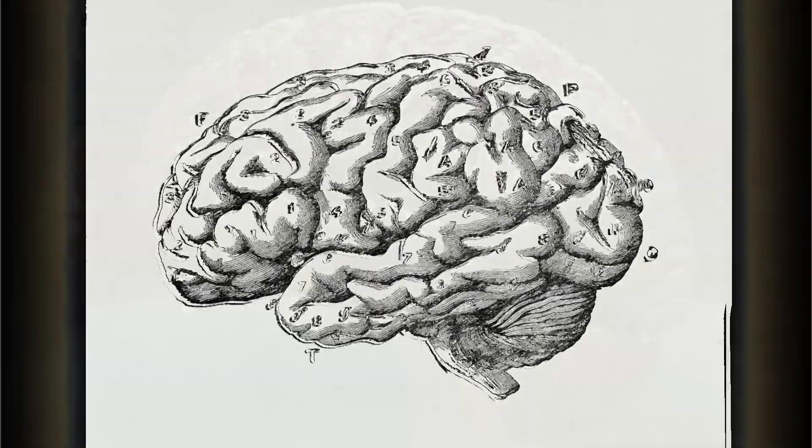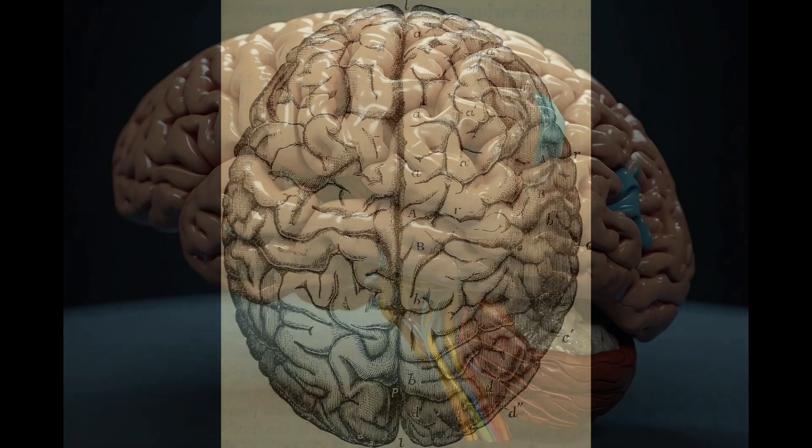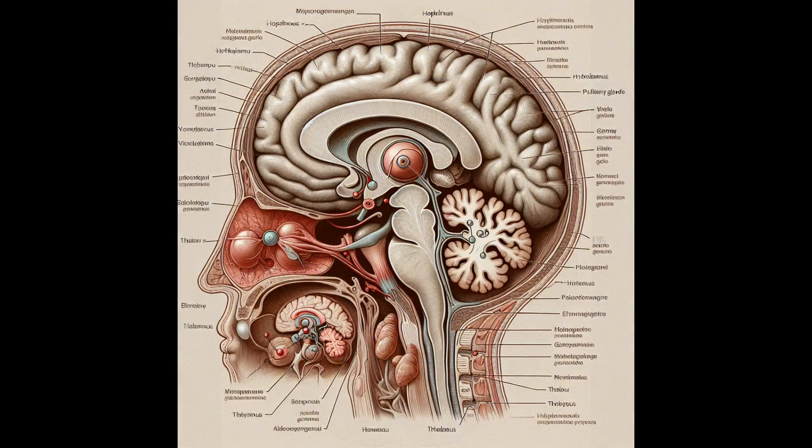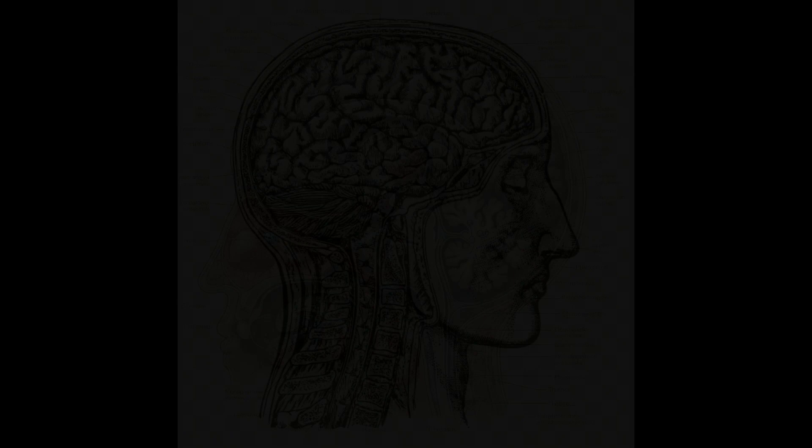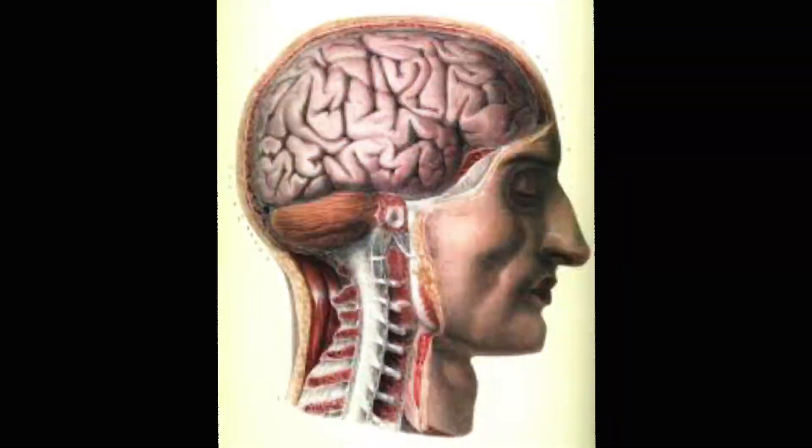Hi guys, so today in this video we're going to see how the human brain functions. The human brain, often described as the most complex organ in the universe, serves as the epicenter of our thoughts, emotions, behaviors, and consciousness.